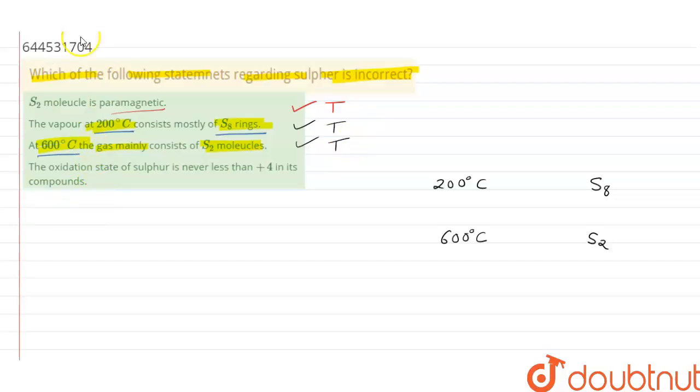Now let's check out the fourth statement: the oxidation state of sulfur is never less than plus four in its compounds. Let's check this statement. We are aware of hydrogen sulfide, that is H2S molecule. If we want to calculate the oxidation state of sulfur, it would be